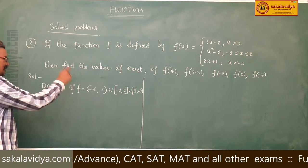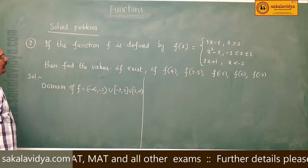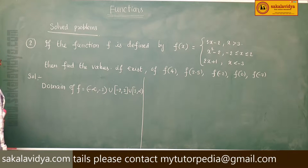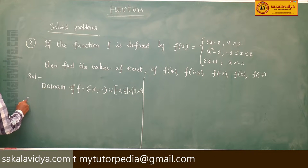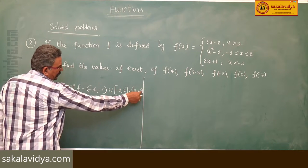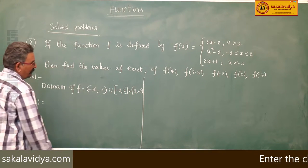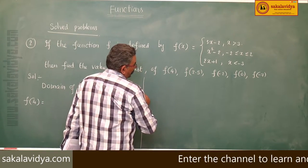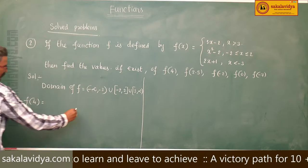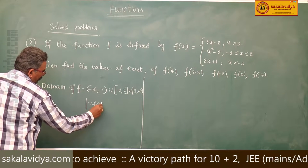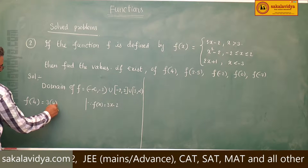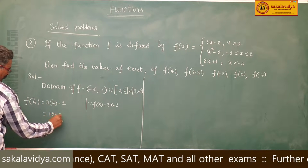Within this domain, let us find f(4). The value 4 lies in the interval (3, ∞), so we can find it. When x > 3, the function is 3x − 2. So f(4) = 3(4) − 2 = 12 − 2 = 10.